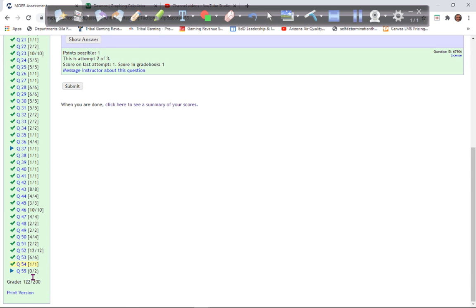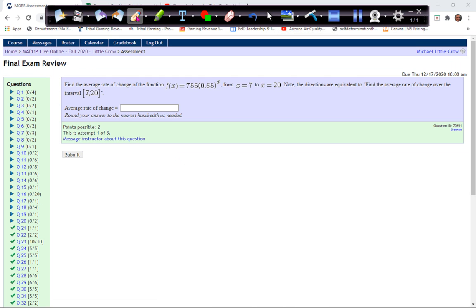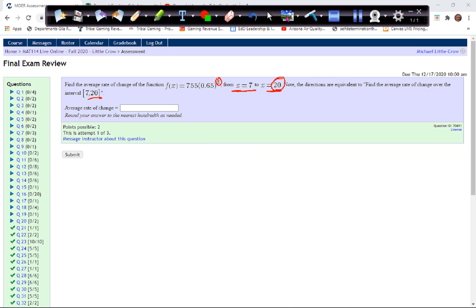And one more question, and we've gotten all the way through the review. The average rate of change for this. So what we're going to need to do is we need to find the y value for each of these. So we've got to find the average rate of change over the interval from 7 to 20. So we know the x value starts at 7. We have to plug that in for x, calculate this. Then we have to plug in the 20 for x, calculate that, and we'll have our two points.